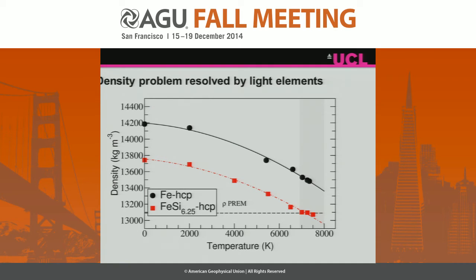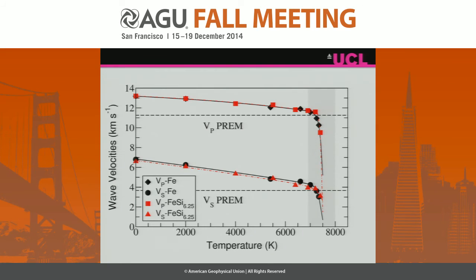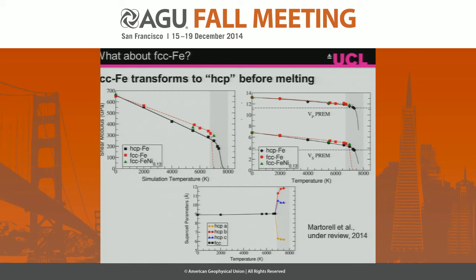We also need to consider density, since those calculations were on pure iron. Adding silicon to match the density also showed pre-melting effects reducing shear wave velocity to seismic values. We looked at FCC iron because nickel stabilizes the FCC structure, but the FCC simulation converted to HCP before reaching the pre-melting region, so FCC structure doesn't matter here.